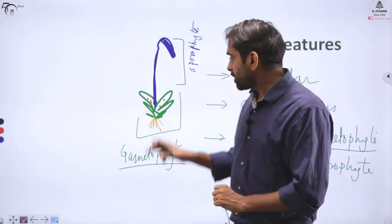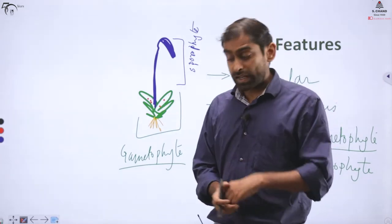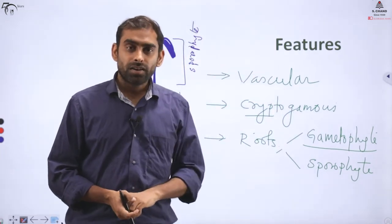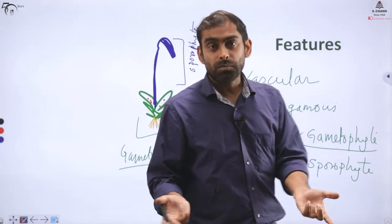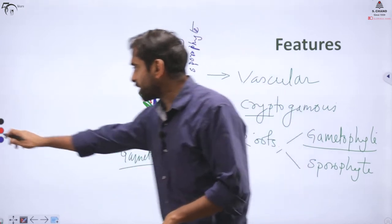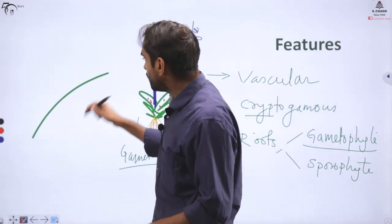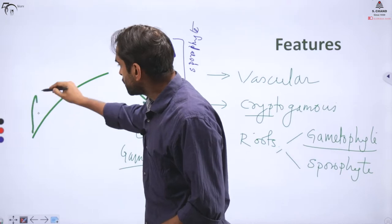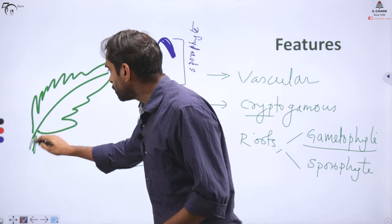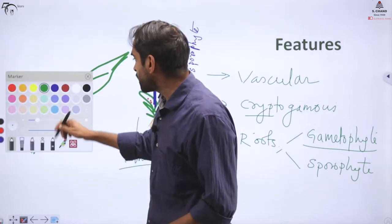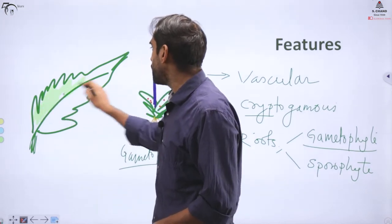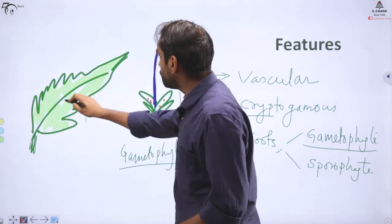In bryophytes, gametophyte is dominant. But in ferns — pteridophytes — it is the opposite. In pteridophytes, sporophyte is the dominant life form. The fern diagram you see, or the ferns you encounter day to day when you go on trips — those ferns that you see are sporophytes, not gametophytes.